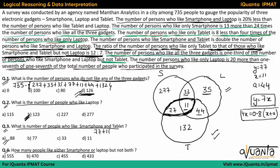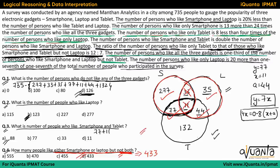The last question: how many people like either smartphone or laptop but not both? We consider both sets but remove the common area (33 and 11). So the count is 277 + 77 + 44 + 35 = 433. So option D is the correct answer.